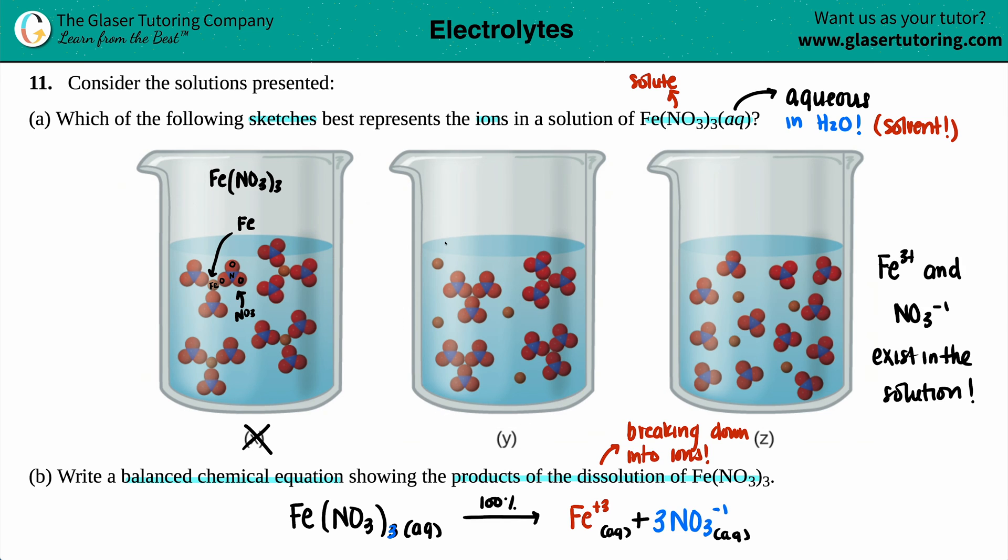Now over here, I do see that the iron has released itself. The iron is now by itself, and it looks like the nitrates are together. So this could potentially be one of them. And then if I look at Z, we have the same exact idea. It seems like the iron has been released, and the NO₃s are by itself. But now which one is a better representation?